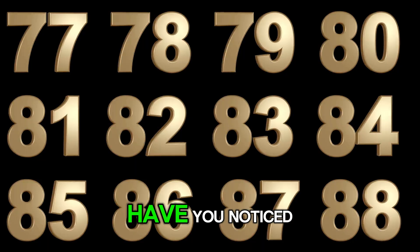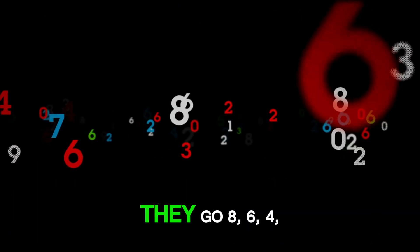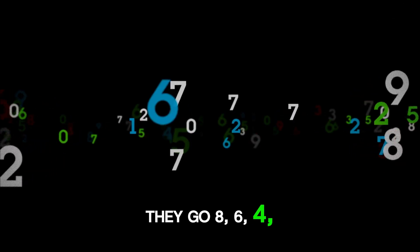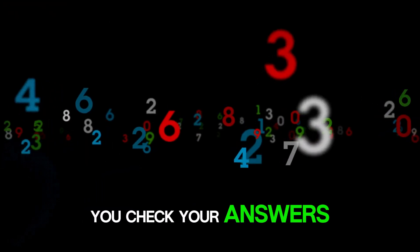Time for some pattern magic. Have you noticed something about the last digits when we multiply by eight? They go eight, six, four, two, zero, and then repeat backwards. This pattern can help you check your answers.